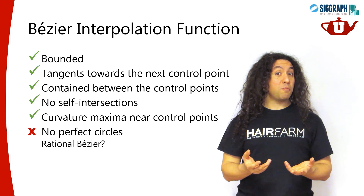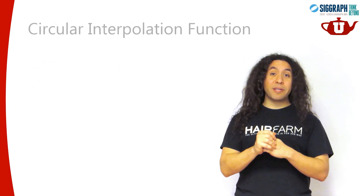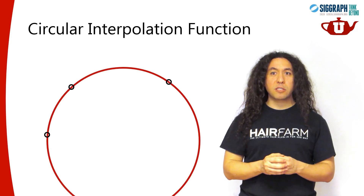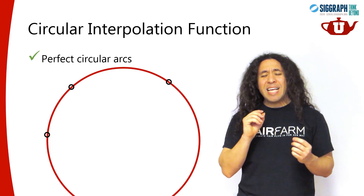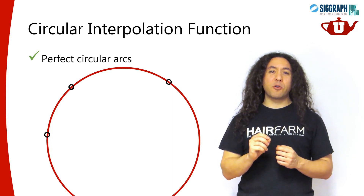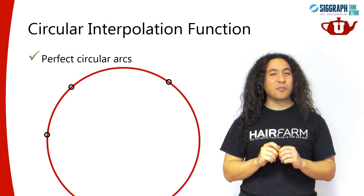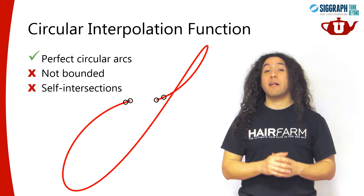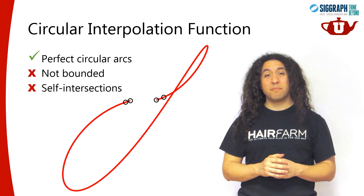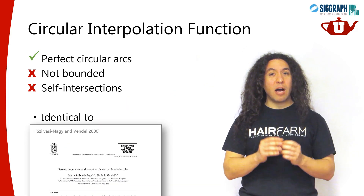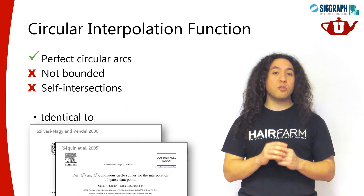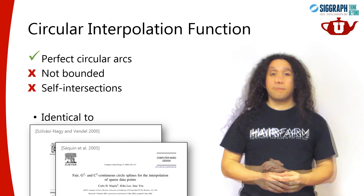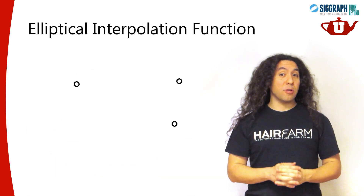So can we do perfect circles? This brings us to our circle interpolation function. Three points in space define a unique circle, and we can use that circle as our interpolation function — and we get perfect circles. However, the other properties of the curves formed by this interpolation function are not all that great. The curves are not bounded at all, they can easily go to infinity, and they can form self-intersecting curve pieces. Incidentally, these curves are identical to the curve formulations proposed by two separate groups independently, but these are not the best examples of this class.